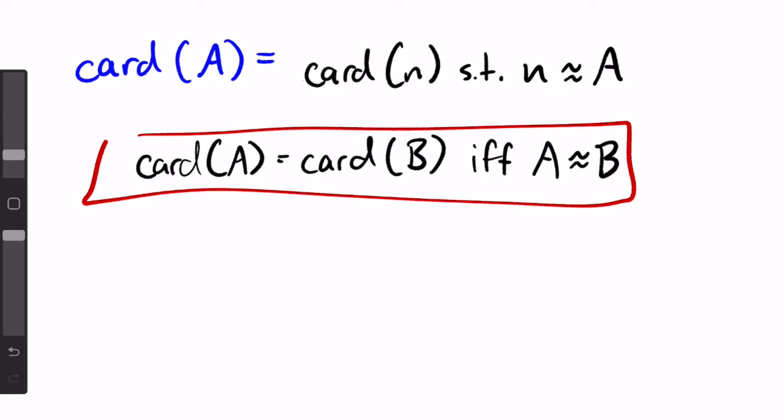card A is equal to card B if and only if A is equinumerous to B. At this point, you might be thinking, wow, that was a lot of work to figure out something we already knew, but it's useful to have the formal definition so that we can escape the limits of our intuition and generalize these rules to all sorts of things we can't even imagine. It also lets us prove things that might not be so obvious.